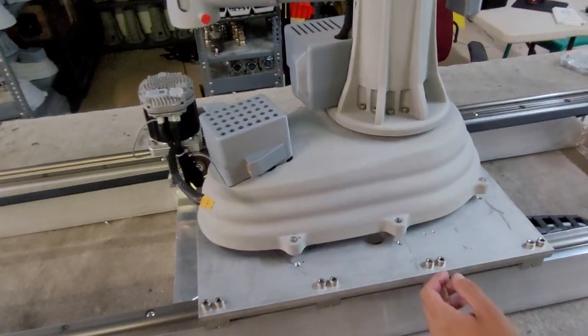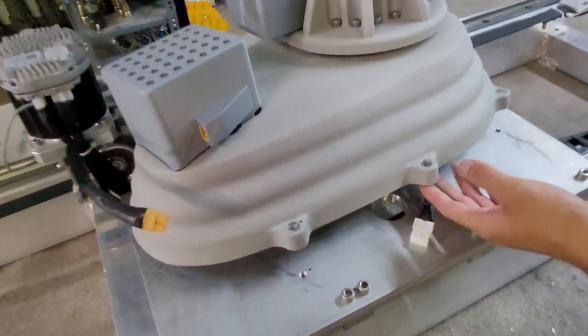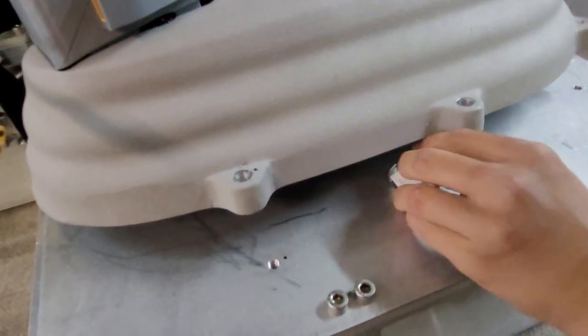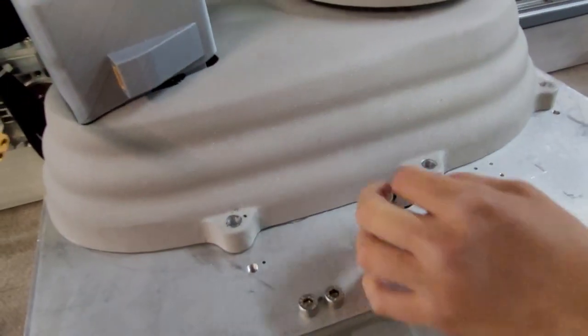Slightly tip the printer over. A second person should be holding onto the Z-rail of the printer for safety. Feed the Roadrunner cable through the hole in the plate.